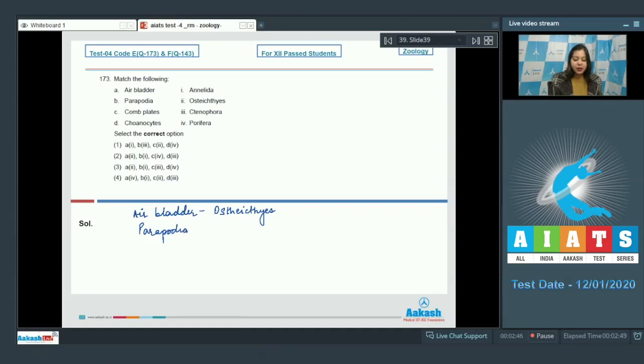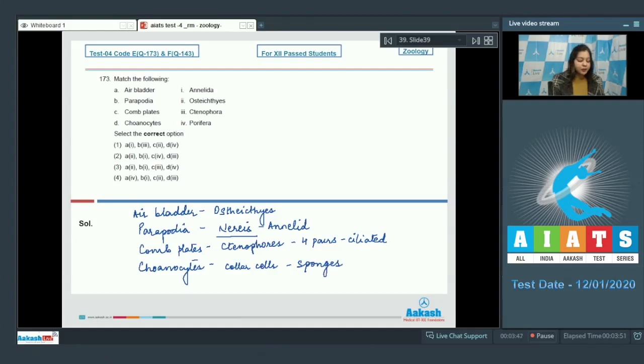Parapodia are locomotory structures and are present in Nereis which is an annelid. Comb plates are a characteristic feature of ctenophores. These comb plates are ciliated characteristic feature of ctenophores in which 4 pairs of these ciliated comb plates are present. Coenocytes are collar cells which are ciliated and are present in sponges which line the spongocoel and canals.